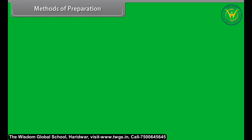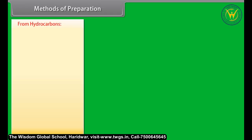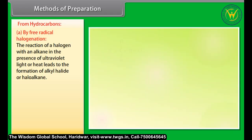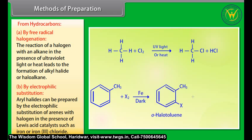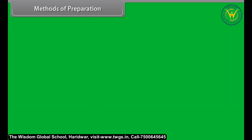From hydrocarbons, by free radical halogenation: the reaction of a halogen with an alkane in the presence of ultraviolet light or heat leads to the formation of an alkyl halide or haloalkane. By electrophilic substitution of arenes with a halogen in the presence of Lewis acid catalysts such as iron or FeCl3.